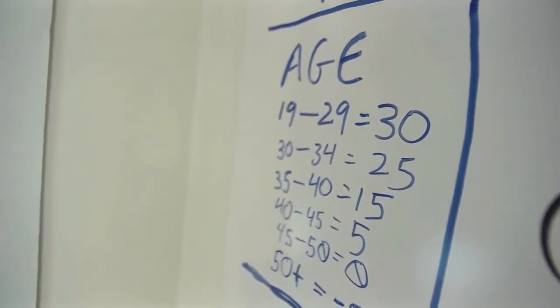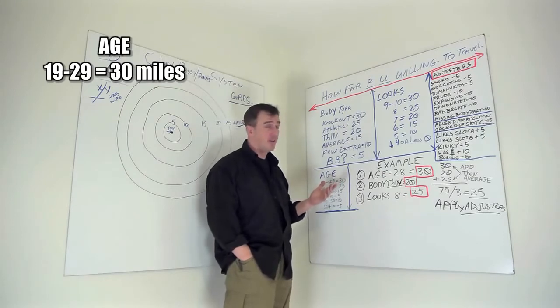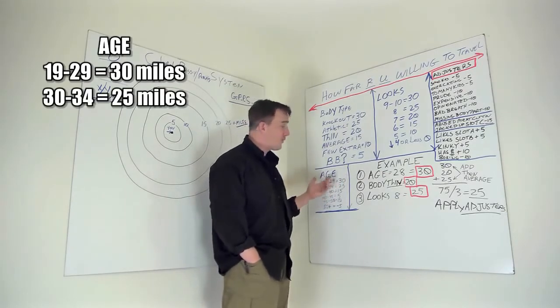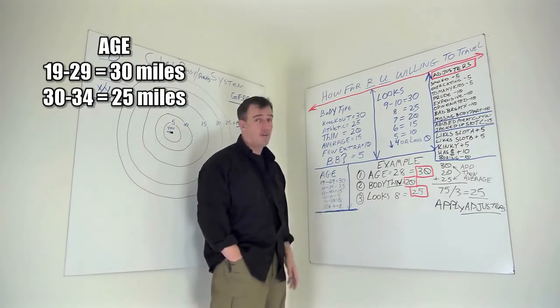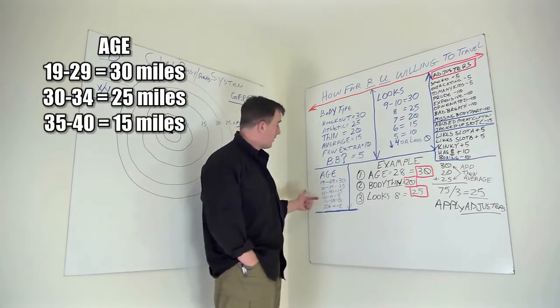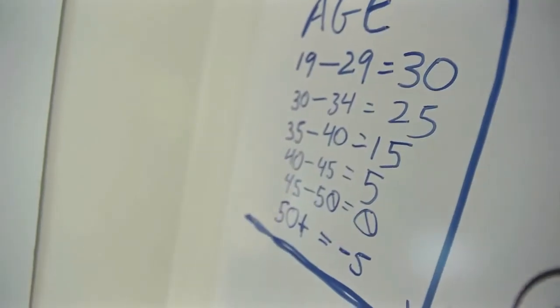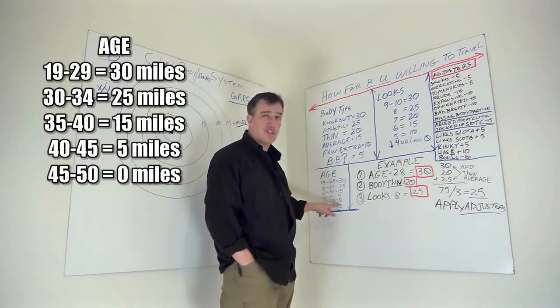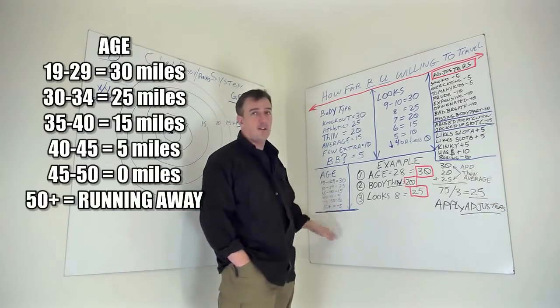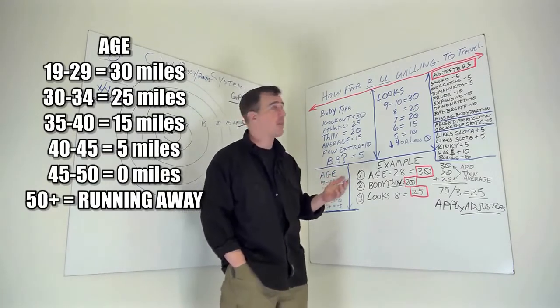Okay. Let me go down to age. 19 to 29. Who's not going to drive 30 miles to hit some of that? I mean, I would. 30 to 34. You're dropping off a little bit. 25 miles. 35 to 40, 15. 40 to 45 is 5. And then 45 to 50 is pretty much zero. And everything beyond 50, you're dealing with negative numbers. You're kind of beyond cougar stage at that point.